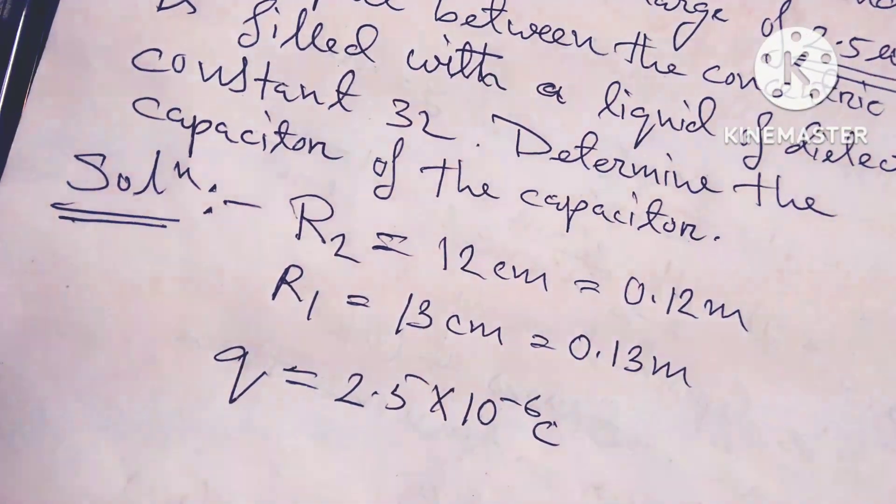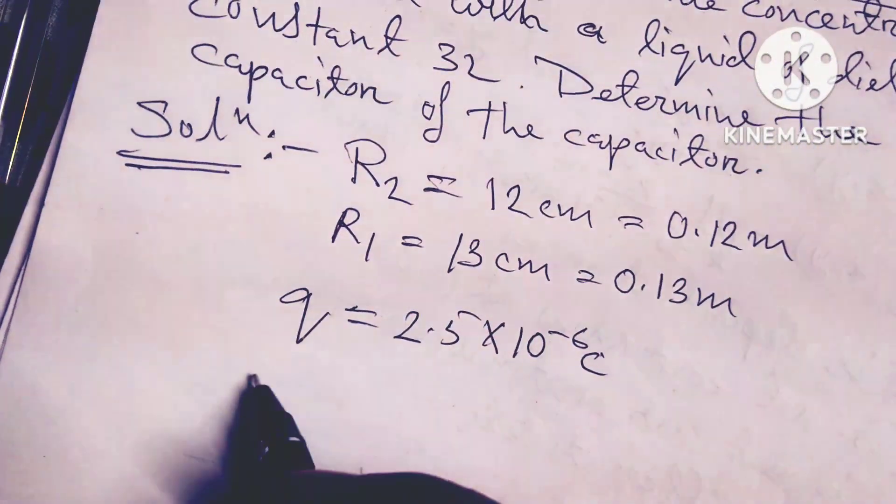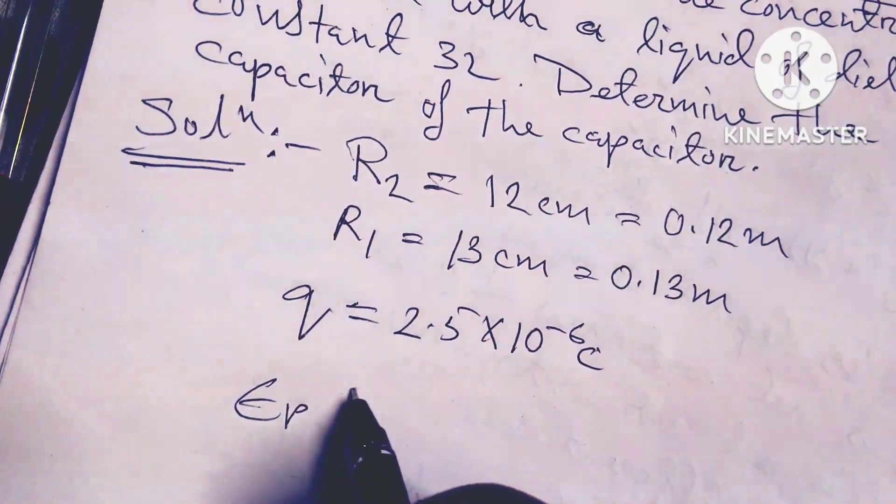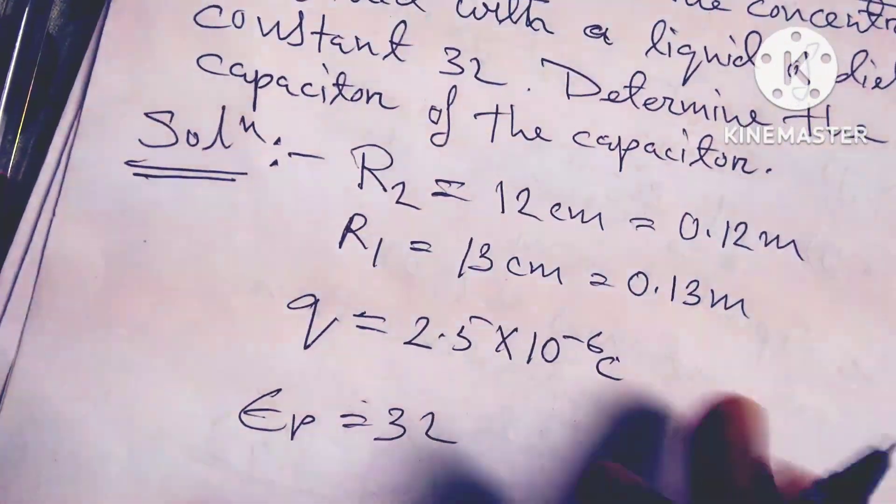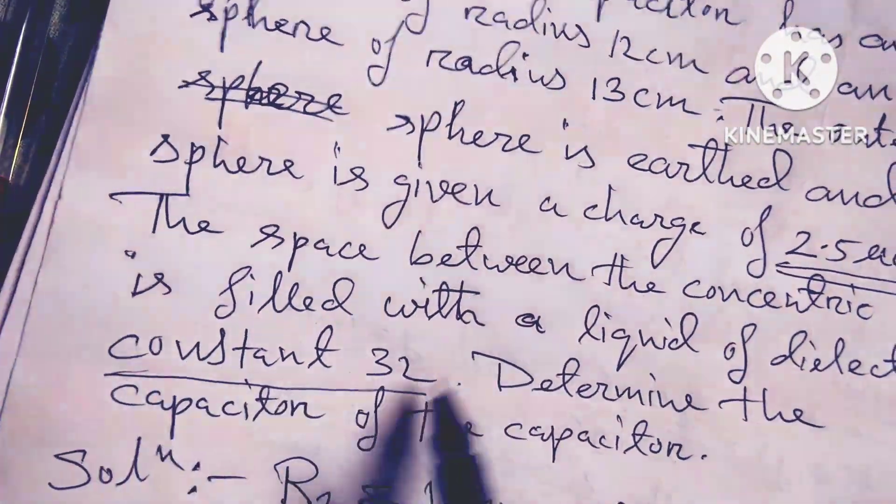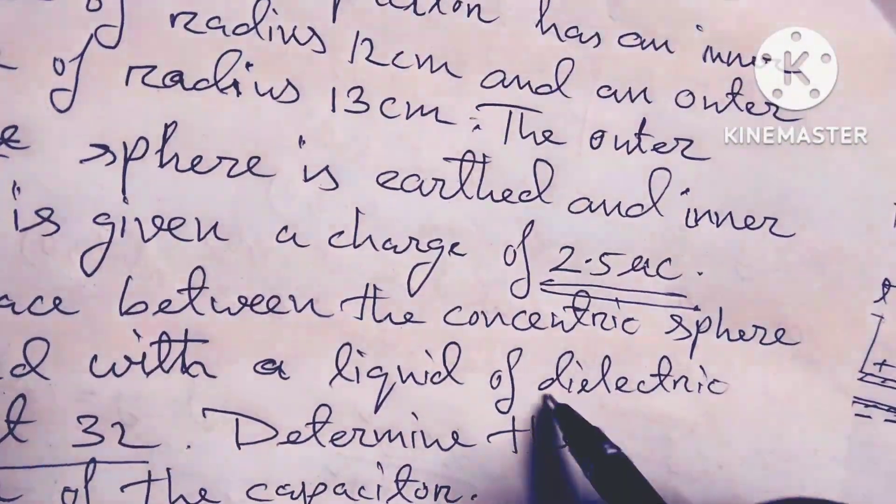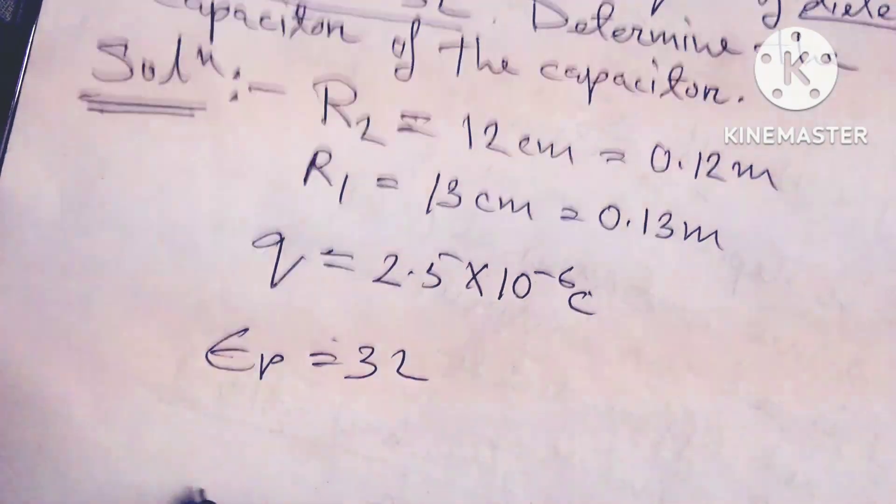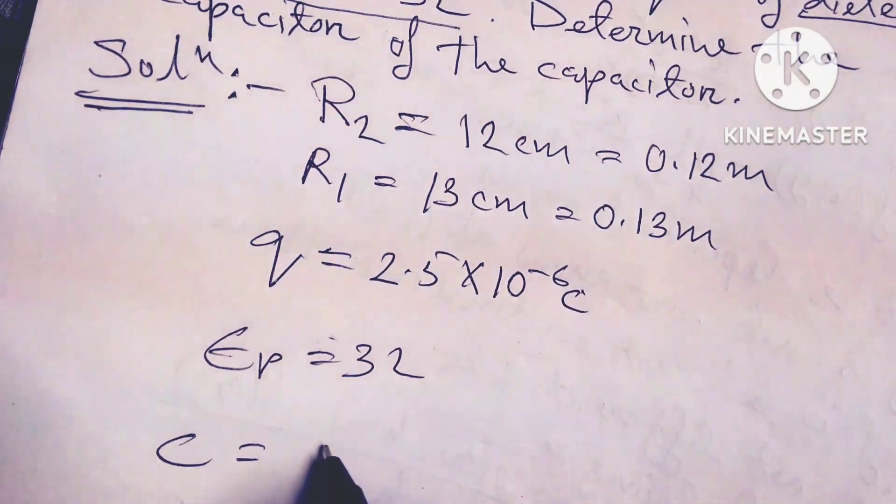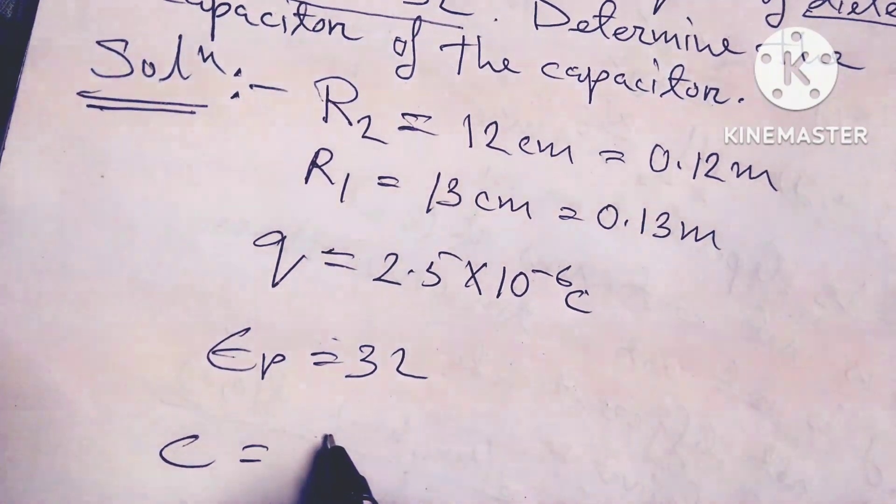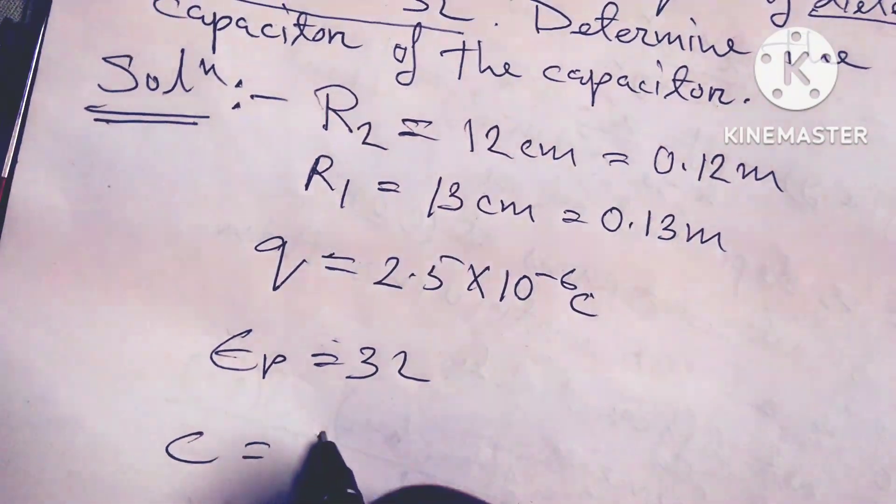εᵣ = 32. The dielectric constant is given as 32. So C equals - what is the formula? C = 4πε₀